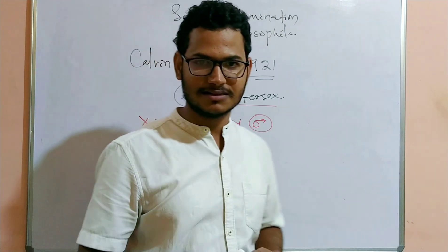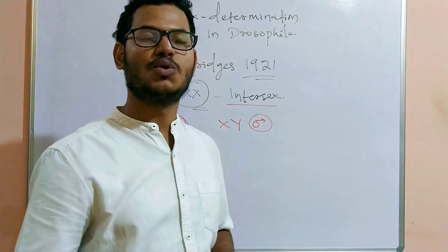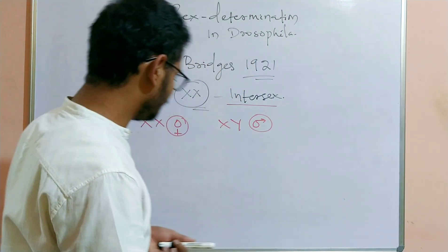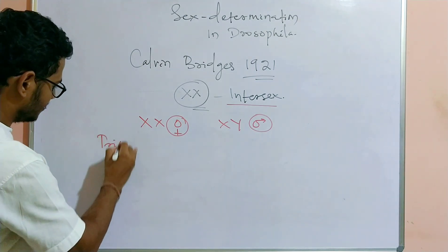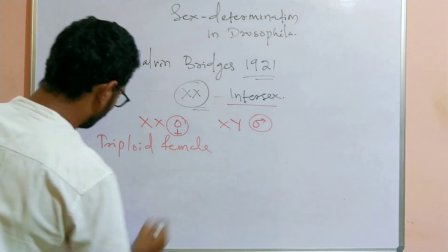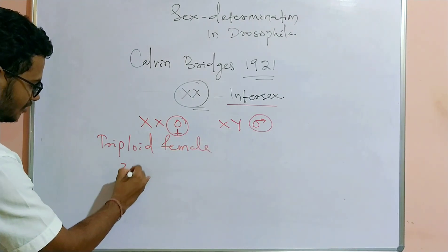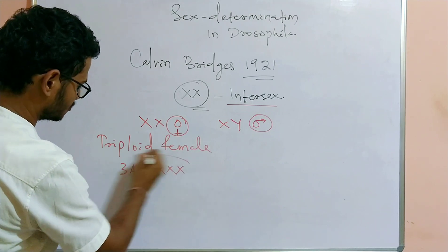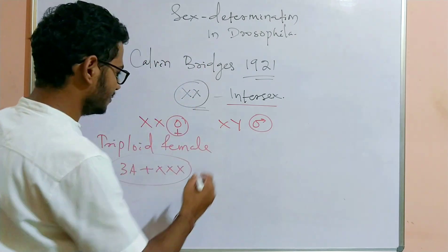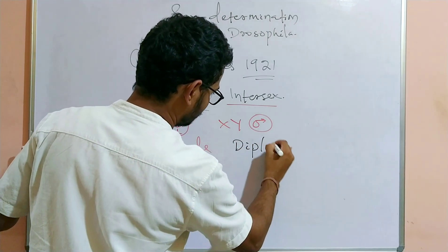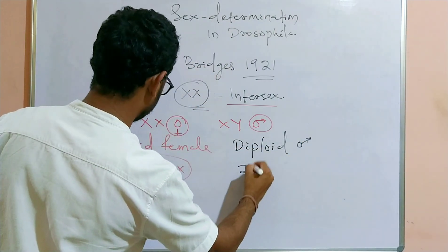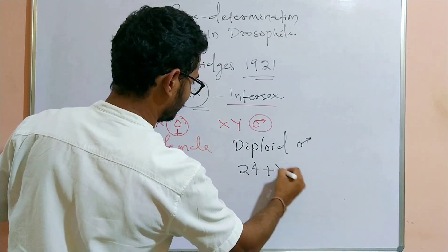He concluded that the number of autosomes present in a specific Drosophila has a role in the determination of sex. He also accidentally found a triploid female, and this triploid female had three sets of autosomes and three X chromosomes. He then crossed this triploid female with a diploid male.